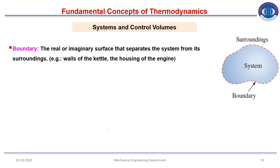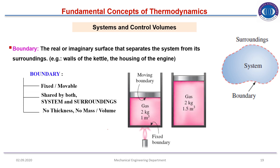A boundary is a real or imaginary surface that separates the system from its surroundings — for example, the wall of a kettle or the housing of an engine. Properties of a boundary: it can be fixed or movable, is shared by both system and surrounding, and has no thickness, no mass, and no volume.